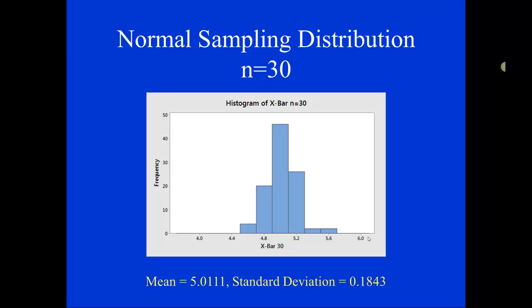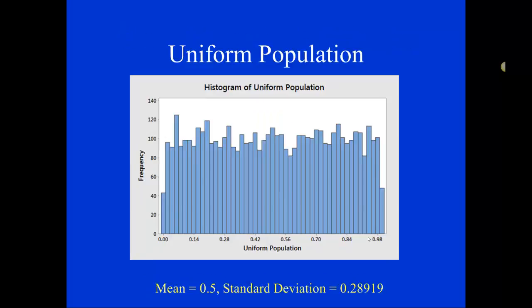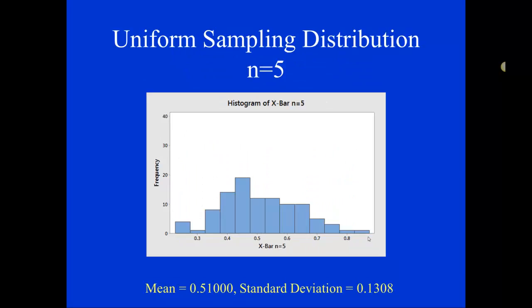But what happens when we don't start with a normal distribution? So when we start with, say, a uniform population. So this population, clearly not normally distributed. It's kind of rectangle shaped. But what happens to the sampling distribution? Well, when I have a sample of size 5...